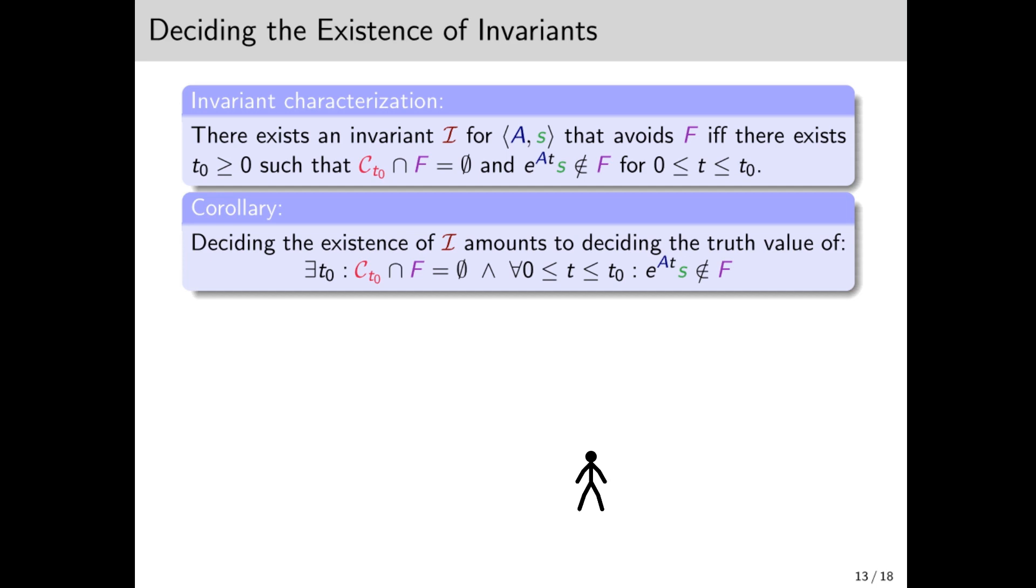So now we know that there exists an invariant that contains the orbit and avoids the target, if and only if there exists t₀, such that C_{t₀} is disjoint from F, and the tail doesn't hit F. We can express this in the following sentence. And now, the question is, of course, whether we can decide the truth value of this sentence. Well, if F is R_exp definable, then this is decidable assuming Schanuel's conjecture. It's a conjecture in transcendental number theory, which I will not go into. It's fair to rely on this conjecture, since the decidability of R_exp relies on it. We remark, however, that it's still not completely trivial, since the tail is not definable even in R_exp, so there is some work there.